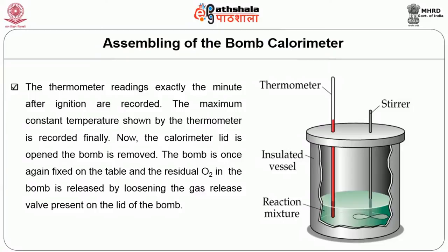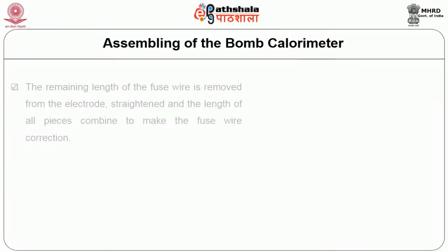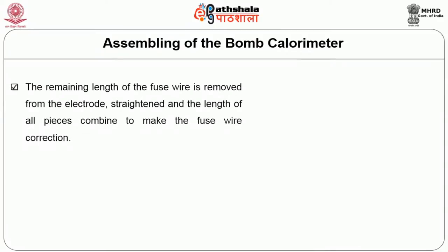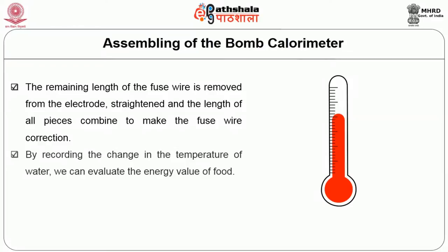The bomb is fixed on the table and the residual oxygen is released by loosening the gas release valve on the lid. The remaining length of fuse wire is removed from the electrode, straightened, and all pieces combined to make the fuse wire correction. By recording the change in the temperature of water, the energy value of food is calculated.